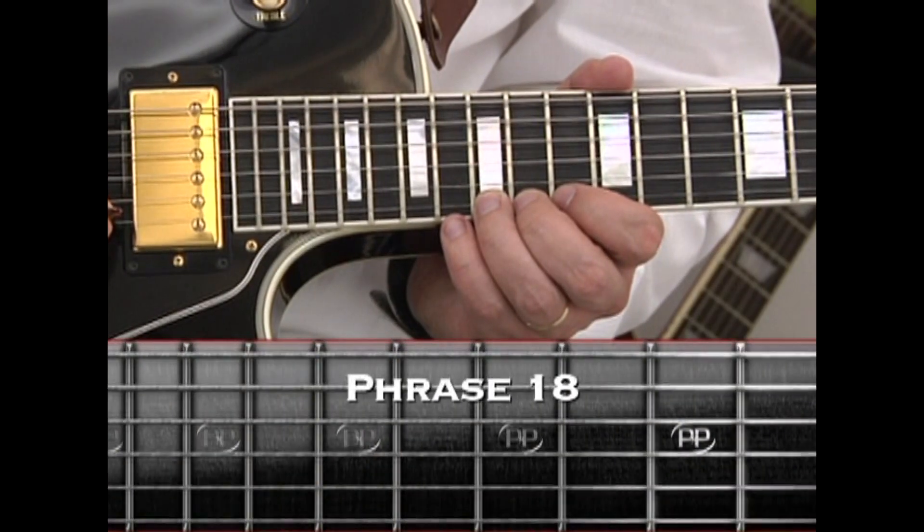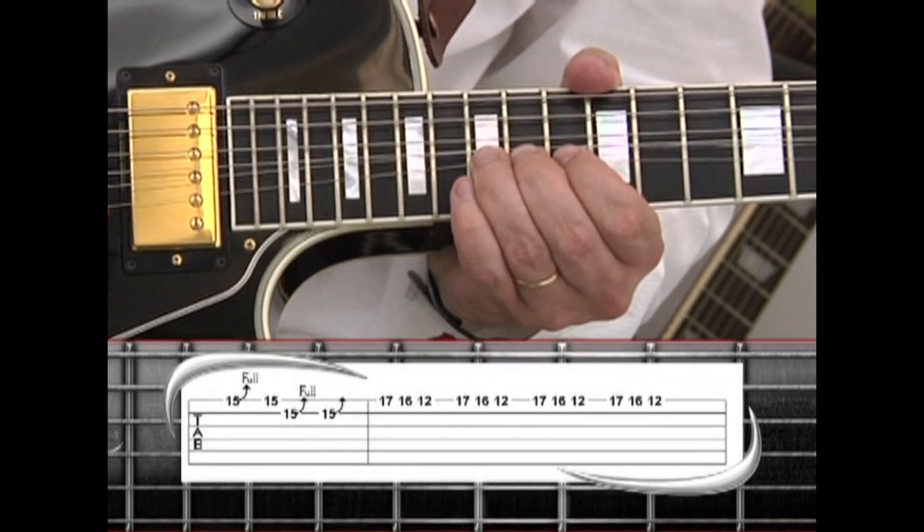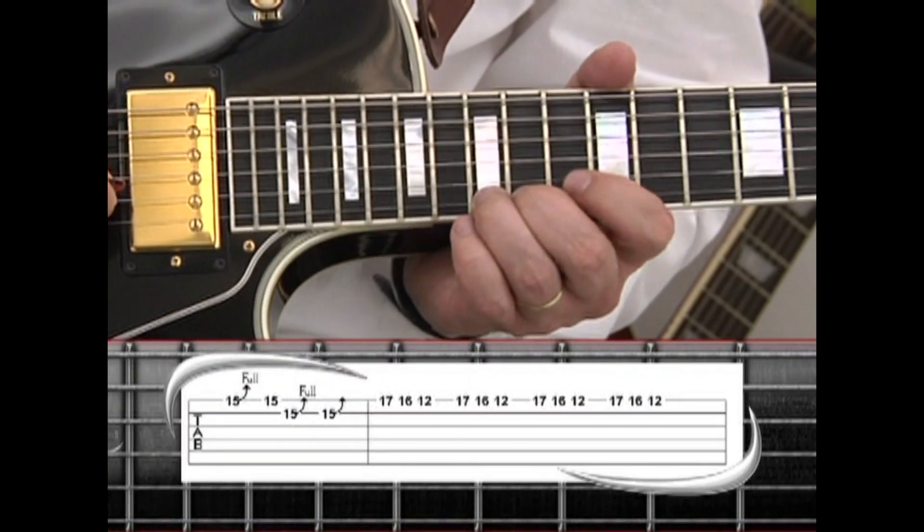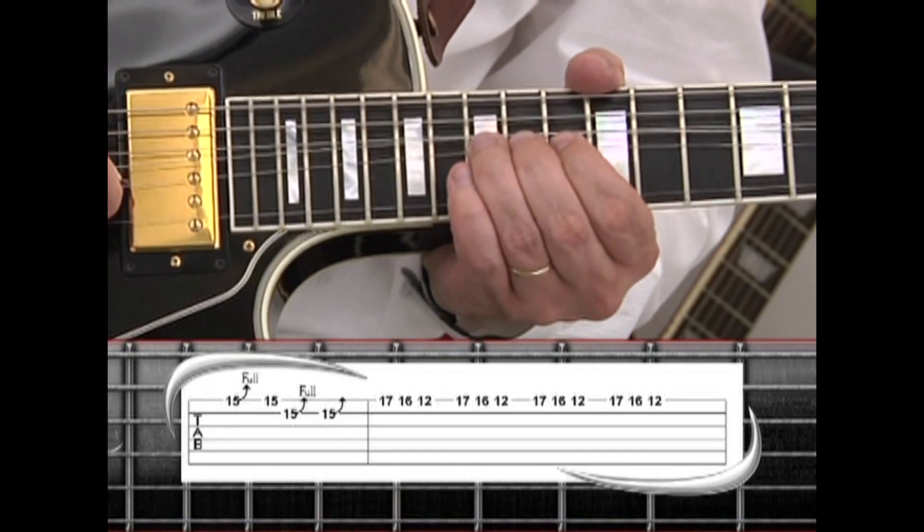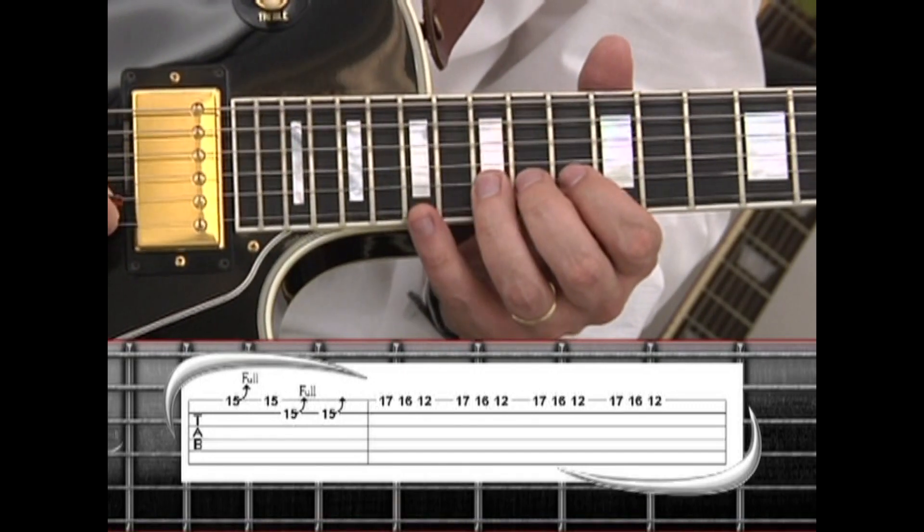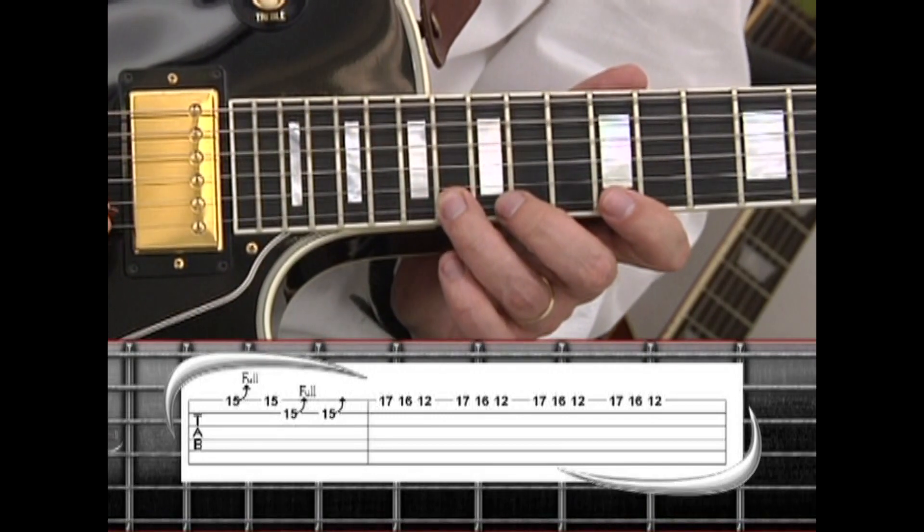Phrase 18 wraps up the 3rd solo on the 1st string 15 with the bend, 15, to 2nd string 15 bend, 15 bend, to 1st string 15 bend, 1st string 17 with the pinky, 16 with the ring, and 12 with the index. Repeat 3 more times.